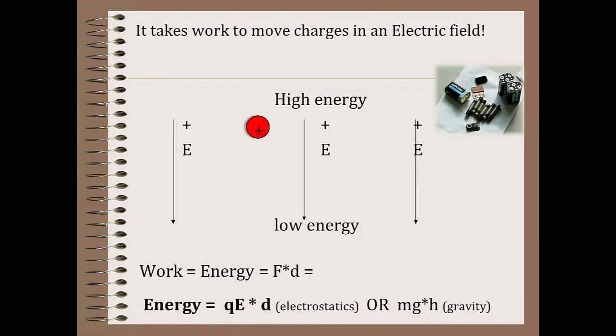So if we want to break this down, force to push a charge in electric field is equal to q times E, because electric field is force divided by q. And then we multiply by that distance. So in other words, we can find the electric potential energy by just multiplying q, the size of the charge, times E, the strength of the electric field, times the distance we move it.